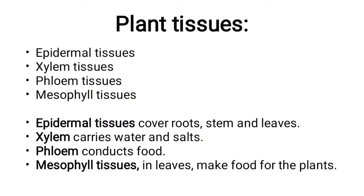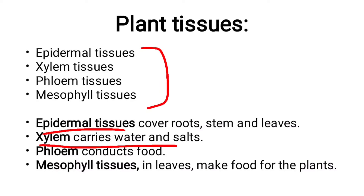The main types of plant tissues include epidermal tissue, xylem, phloem, and mesophyll tissue. Each of these performs different functions within the plant.